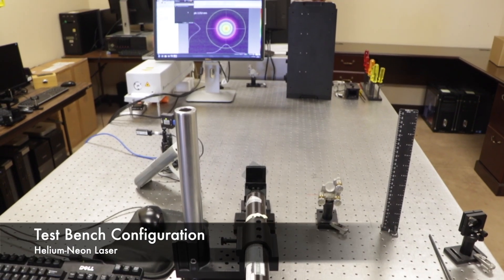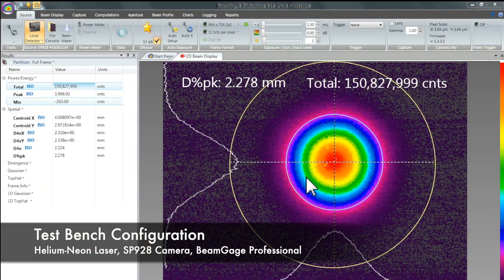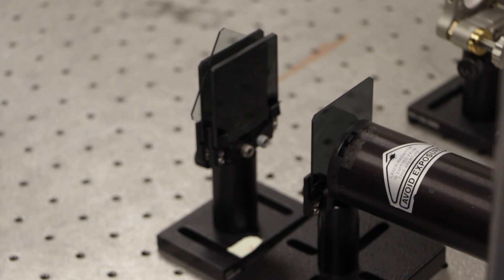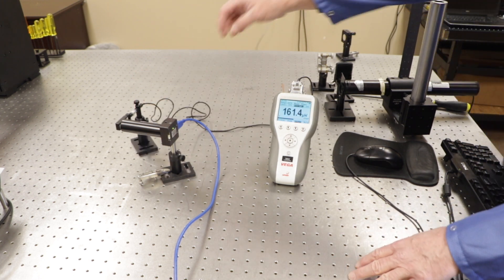We have set up a test bench with a green helium neon laser and an SP928 camera with Beam Gauge Professional. The beam is attenuated with an assortment of ND filters. We will first measure the beam energy with an Ophir Vega power meter by placing a sensor in the beam path.